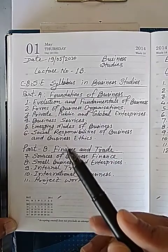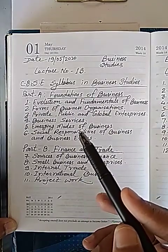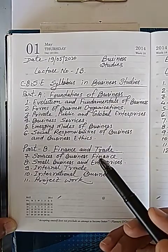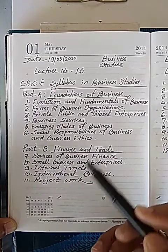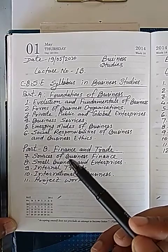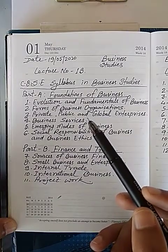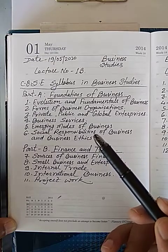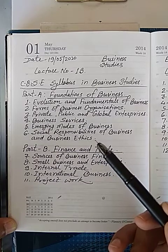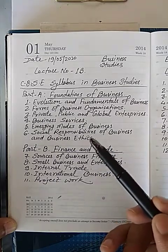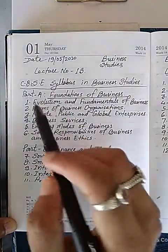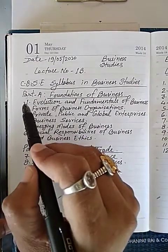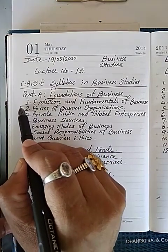One paper will be for three hours — 80 marks in theory and 20 marks in project work. These are all the chapters we will study in class 11th. Now, I am going to introduce you to the first chapter.